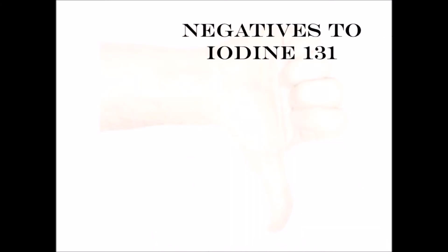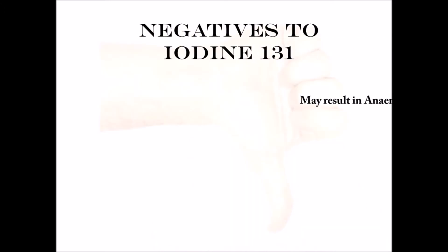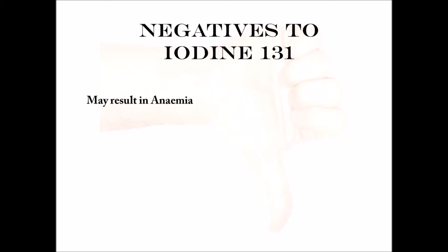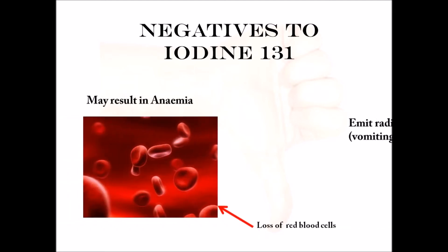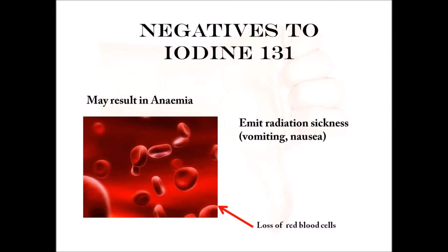There are also some downsides to Iodine-131. There is suppression of the bone marrow which can result in anemia and a reduction in white blood cells. With large doses, it can also cause radiation sickness, which gives nausea, vomiting, chest pain, increased heart rate, itchy skin, and other minor problems.